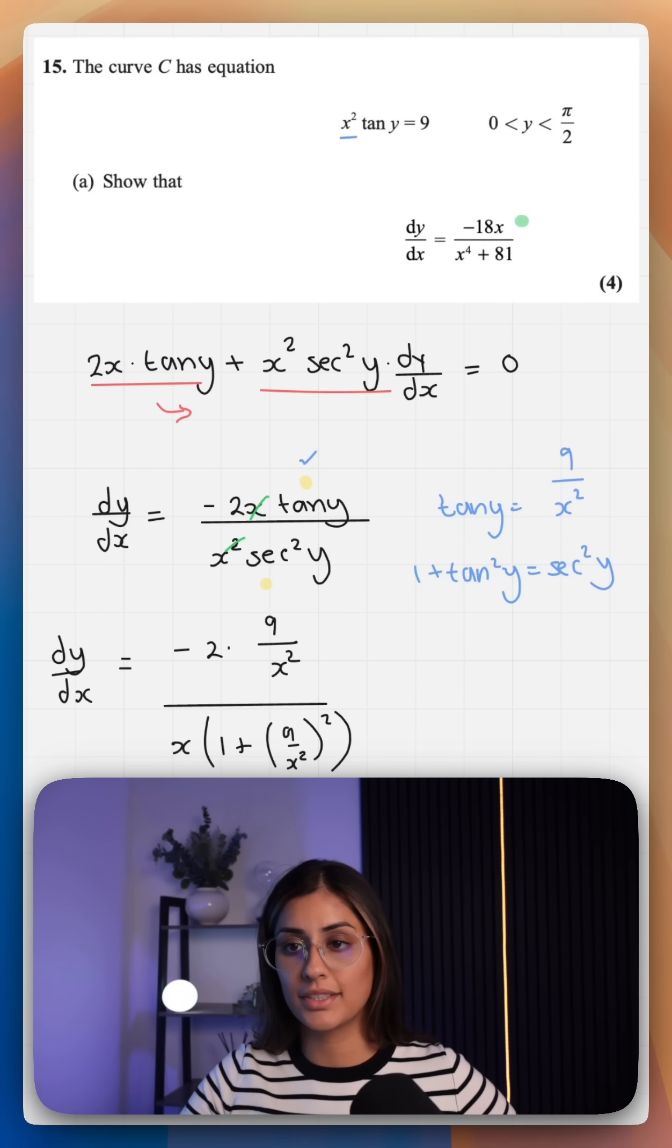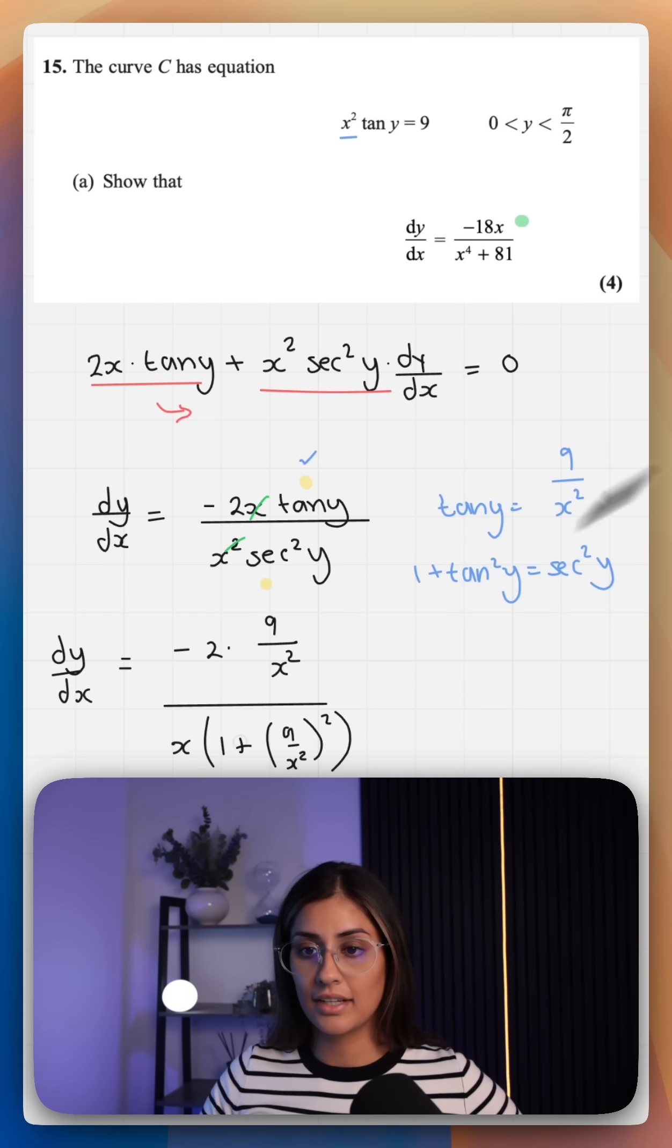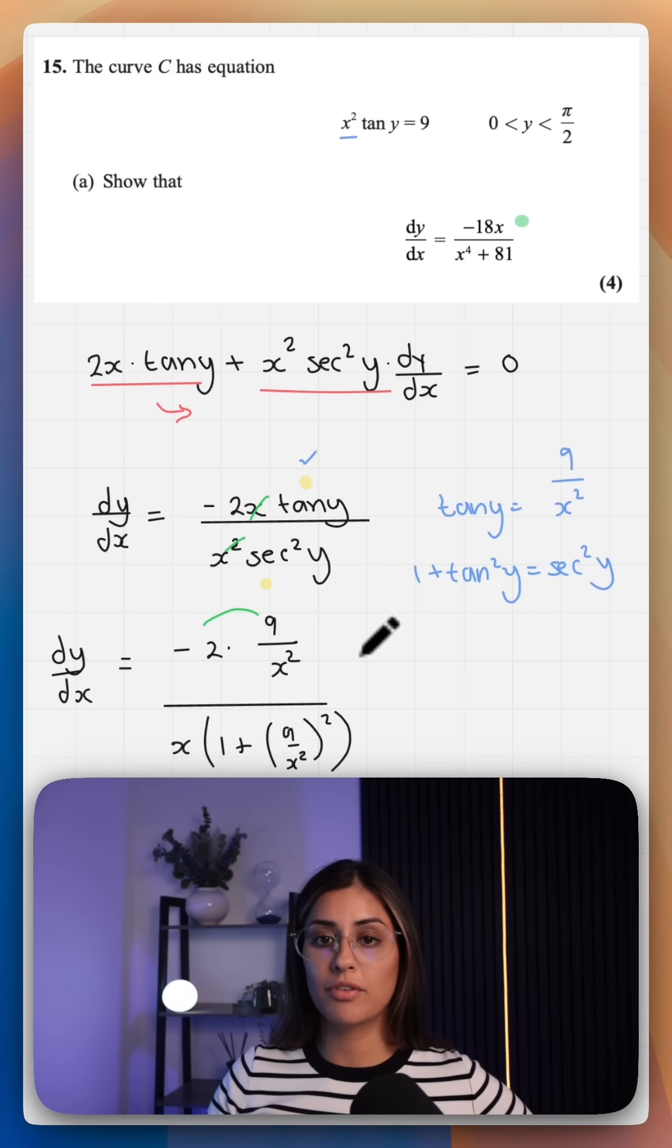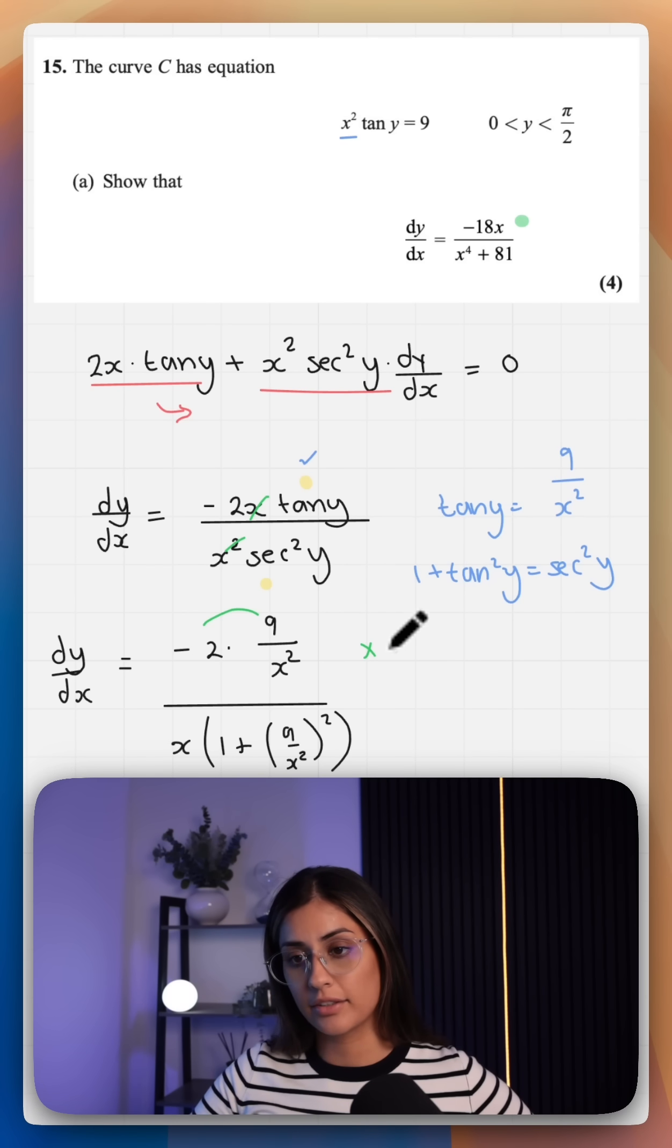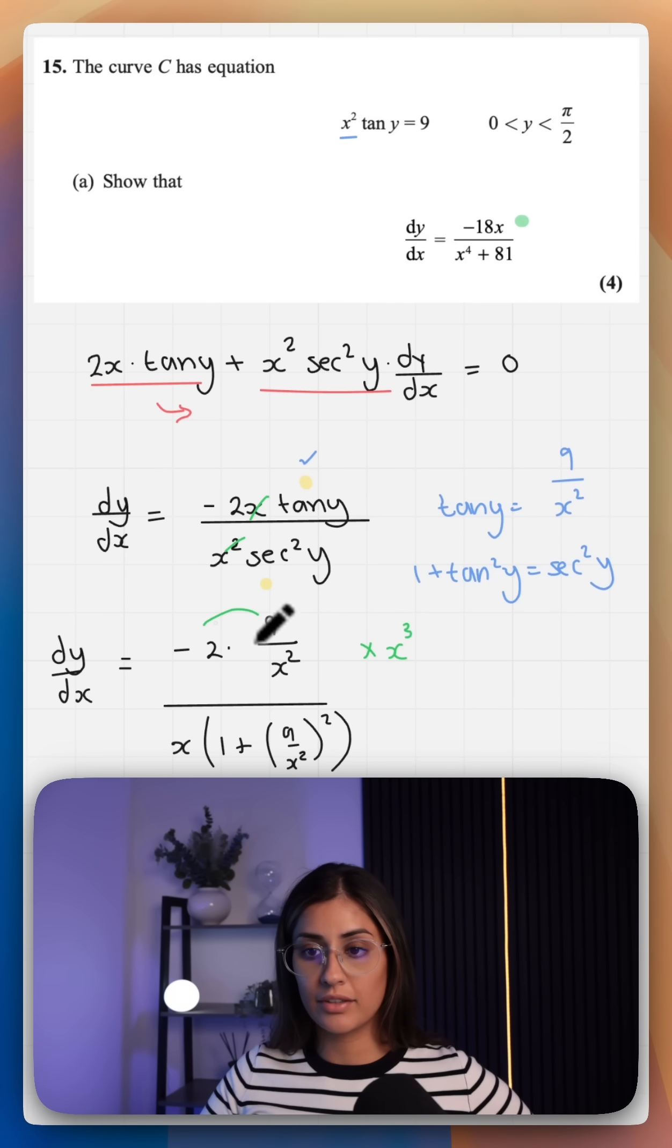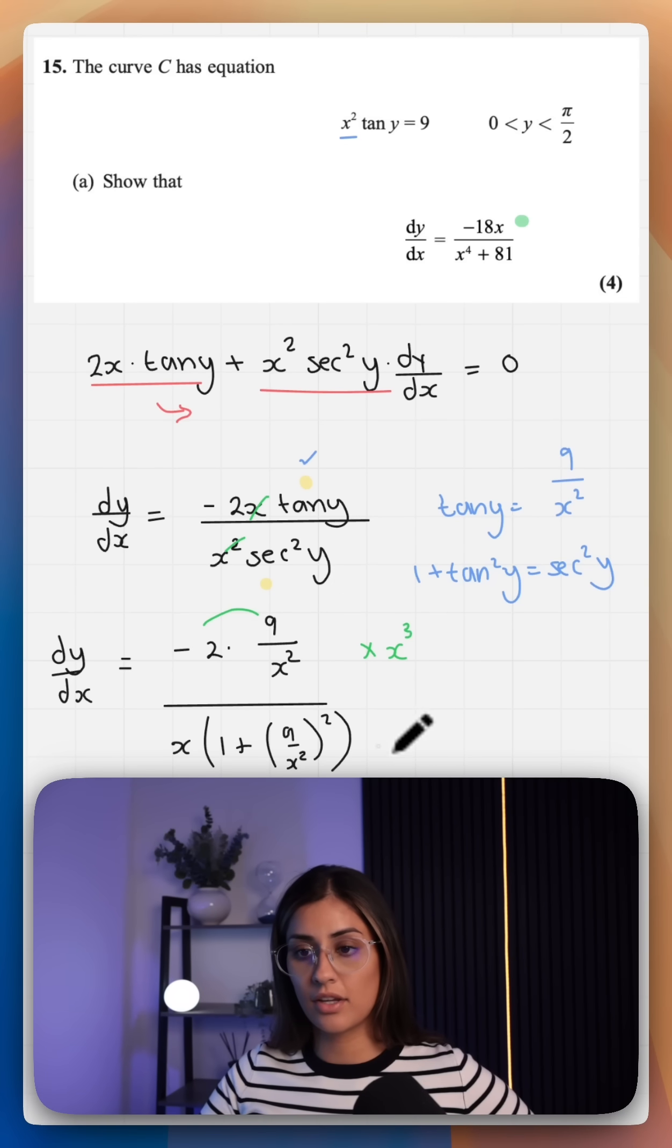But what we do know is our numerator consists of minus 18x. At the moment we have got minus 18 over x squared. To go from dividing by x squared to just having x on top, we have multiplied by x cubed. So if we times everything on top by x cubed, we should cancel that out and be left with just x. I'm going to do that on top and on the bottom.